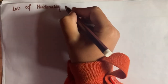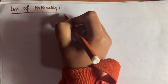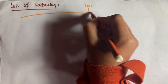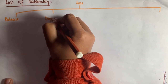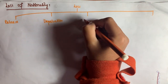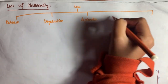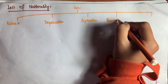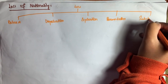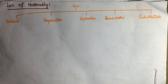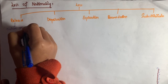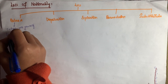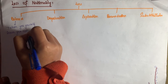Moving towards the loss of nationality — how the nationality of a person can be lost. Nationality can be lost by five ways: number one, release; number two, deprivation; number three, expiration; number four, renunciation; and number five, substitution. Nationality is lost by release when you yourself leave your nationality — when a citizen consciously asks the government for release of their nationality, the government releases it.